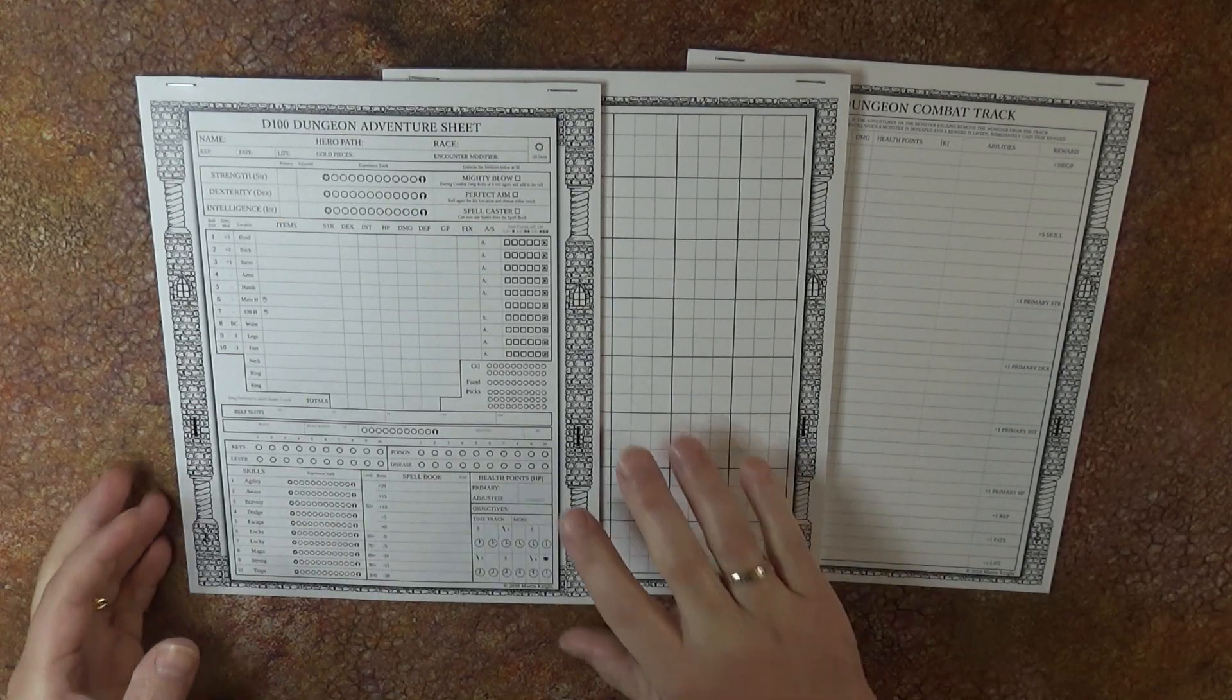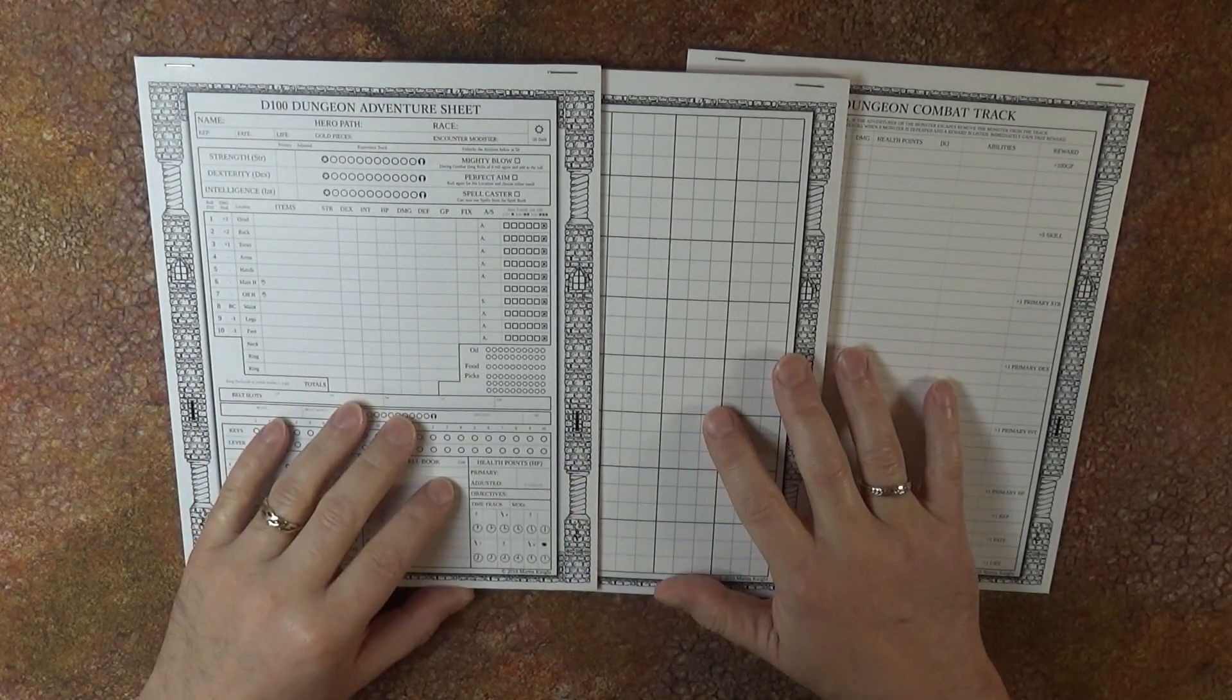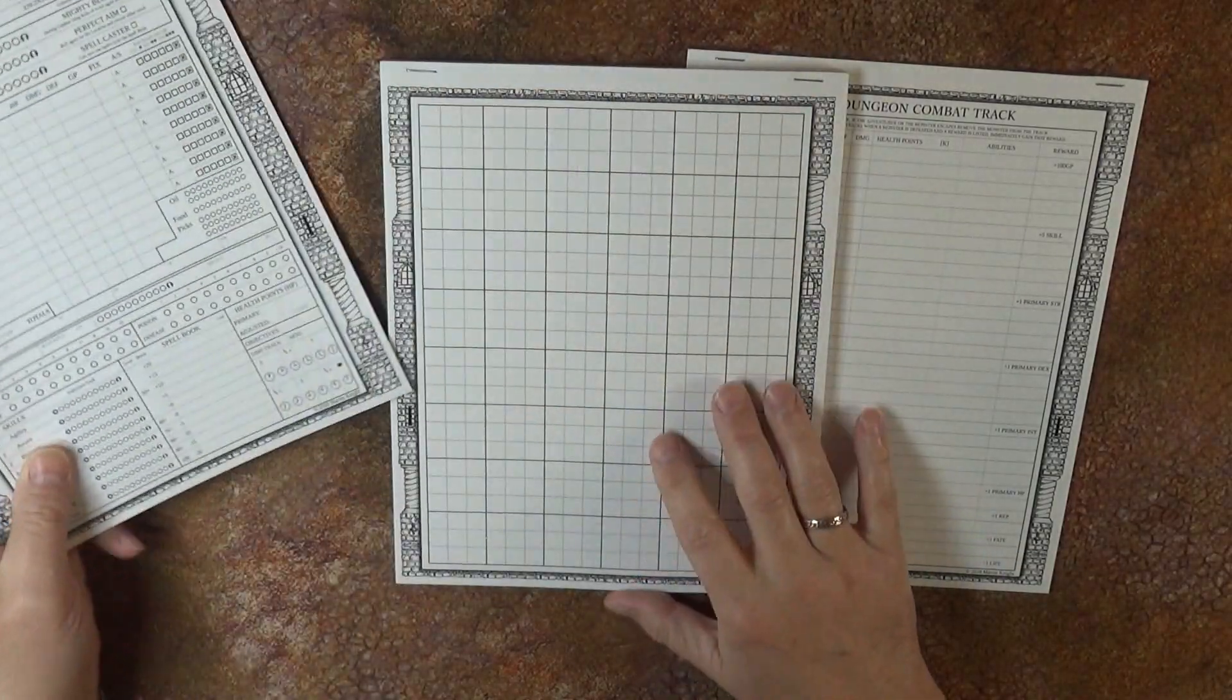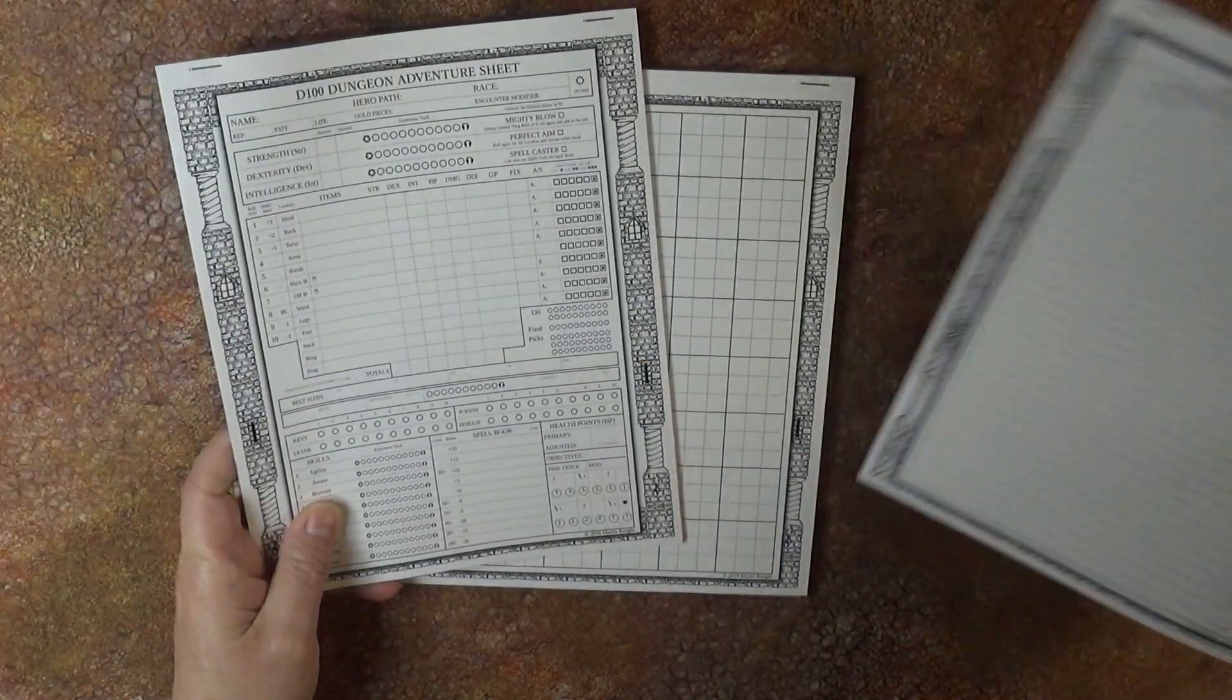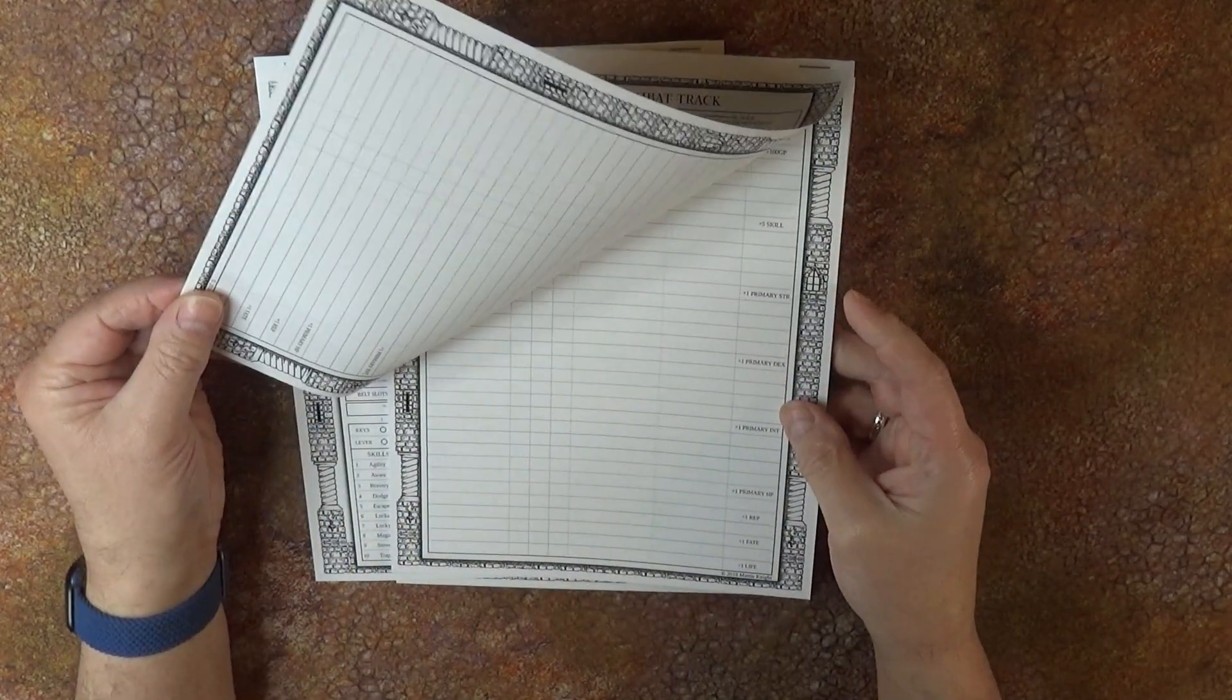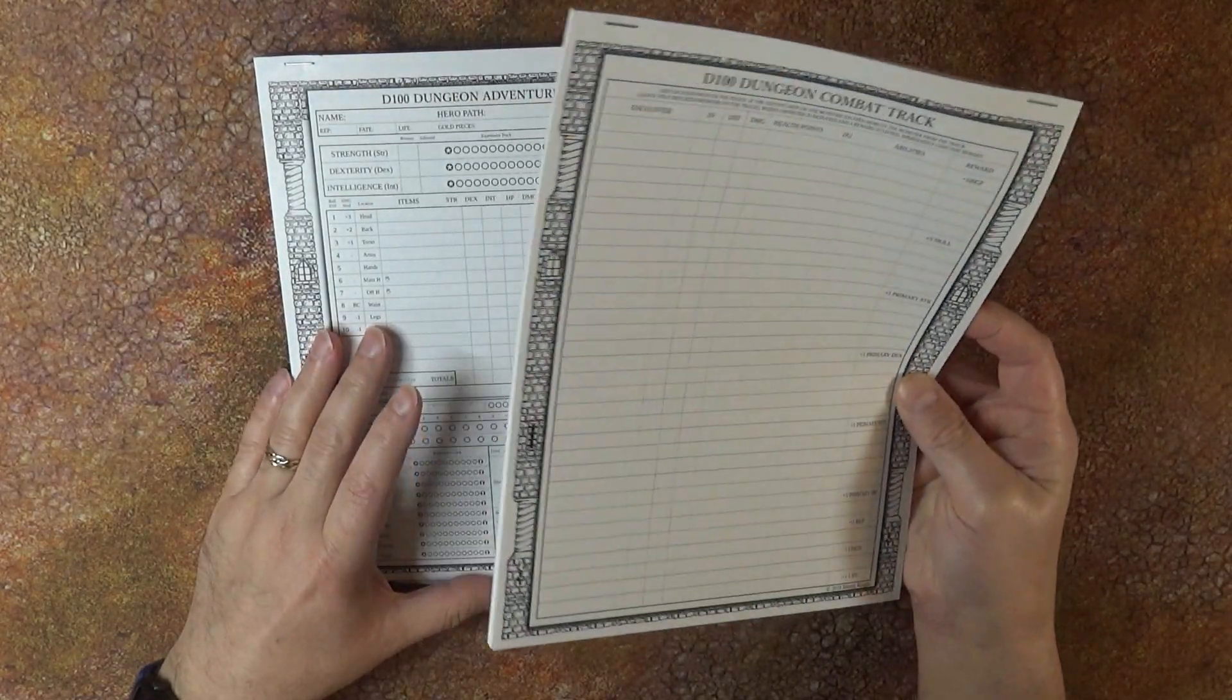So this is a pack of game sheets that's available on the Game Crafter. It contains 20 adventure sheets, 20 dungeon combat track sheets. These are double-sided, so in effect you'll end up with 40 of these.